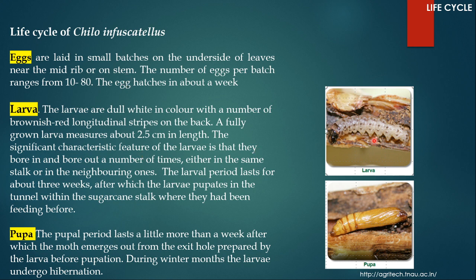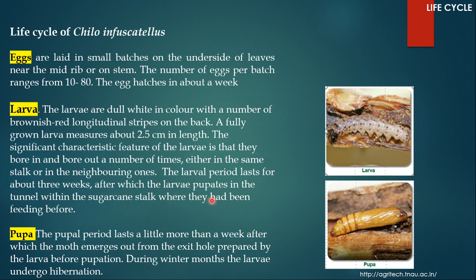The larvae are dull white in color with a number of brownish red longitudinal stripes on the back. A fully grown larva measures about 2.5 centimeters in length — about an inch. The significant characteristic feature of the larvae is that they bore in and bore out a number of times, either in the same stalk or in neighboring stalks. That way they damage not only one plant but also the neighboring ones. The larval period lasts for about 3 weeks.